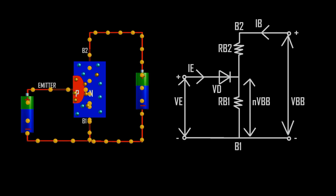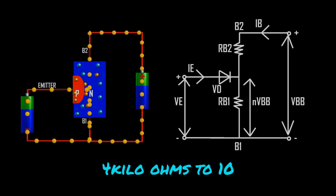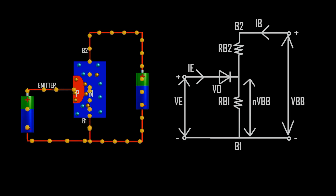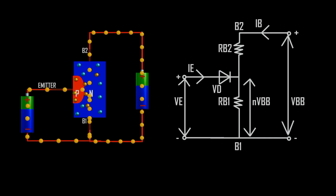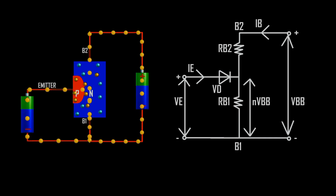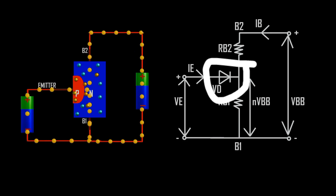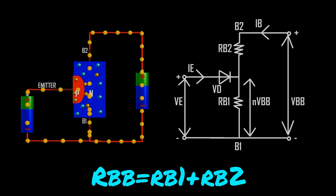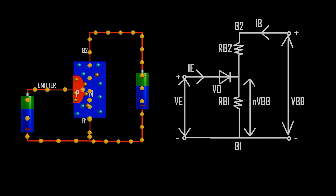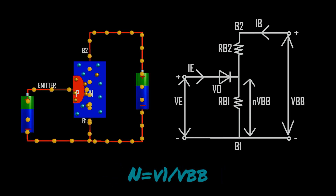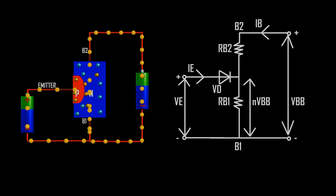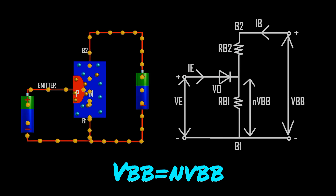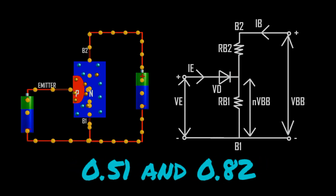Equivalent circuit: The resistance of the silicon bar is called the interbase resistance, with a value from 4 kΩ to 10 kΩ. The resistance RB1 is the resistance of the bar between the emitter and base B1 region, and its value is variable, depending on the bias voltage across the P-N junction. The resistance RB2 is the resistance of the bar between the emitter and the B2 region. The emitter P-N junction is represented by a diode. With no voltage applied to the UJT, the interbase resistance is given by RBB = RB1 + RB2. The intrinsic standoff ratio N of the UJT is given by N = V1 / VBB = RB1 / (RB1 + RB2), and therefore V1 = N × VBB. The value of N generally lies between 0.51 and 0.82.